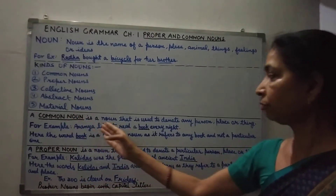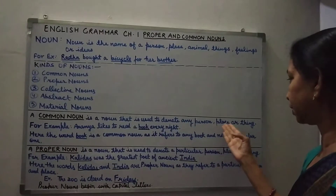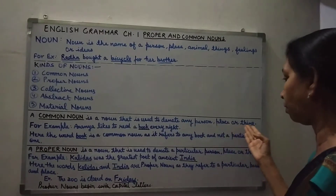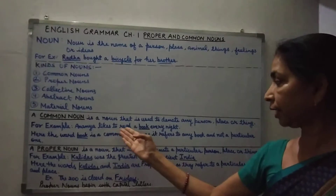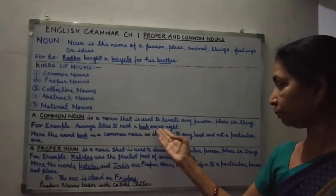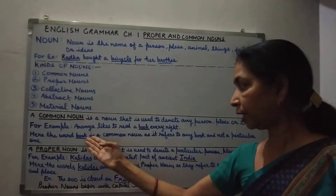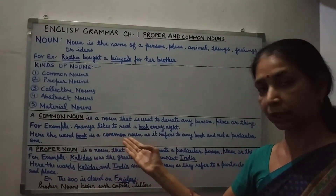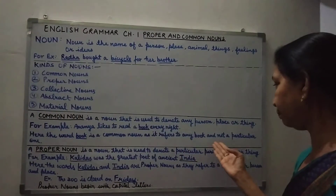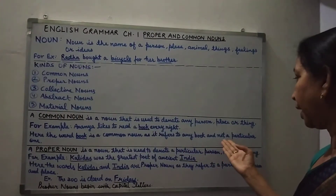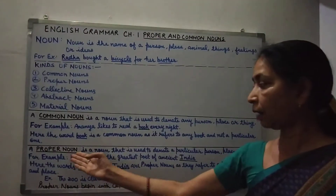A common noun is a noun that is used to denote any person, place or thing. For example: Ananya likes to read a book every night. Here the word 'book' is a common noun as it refers to any book and not a particular one.